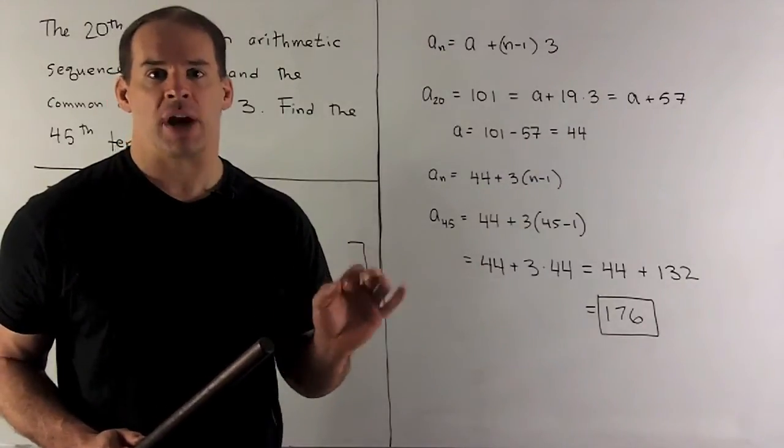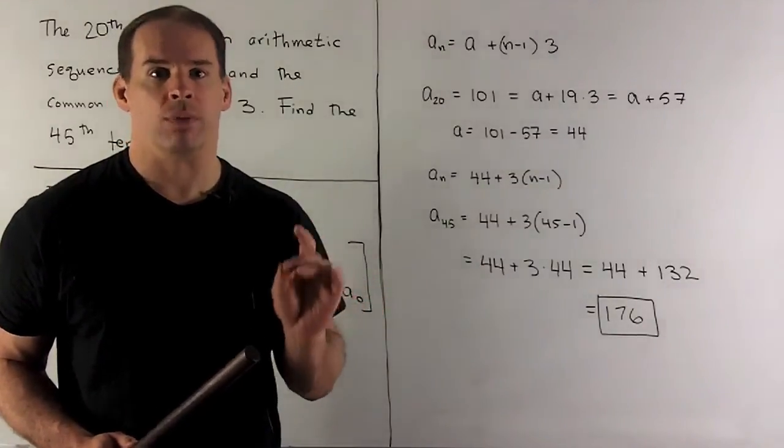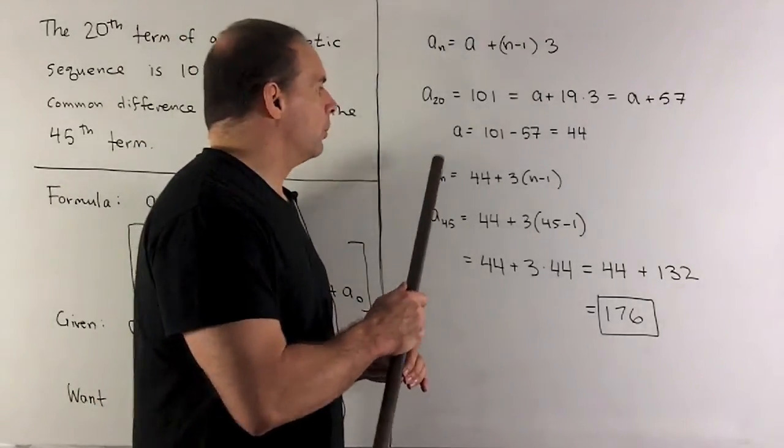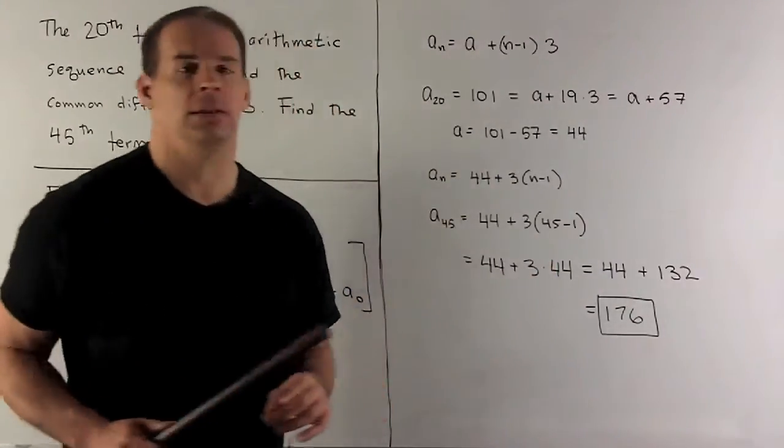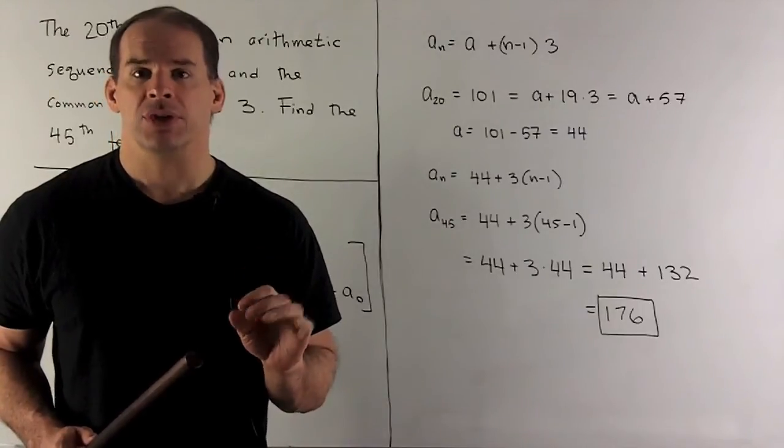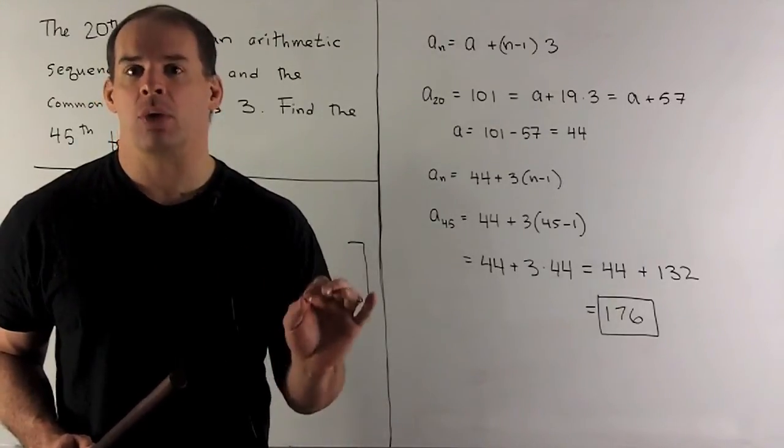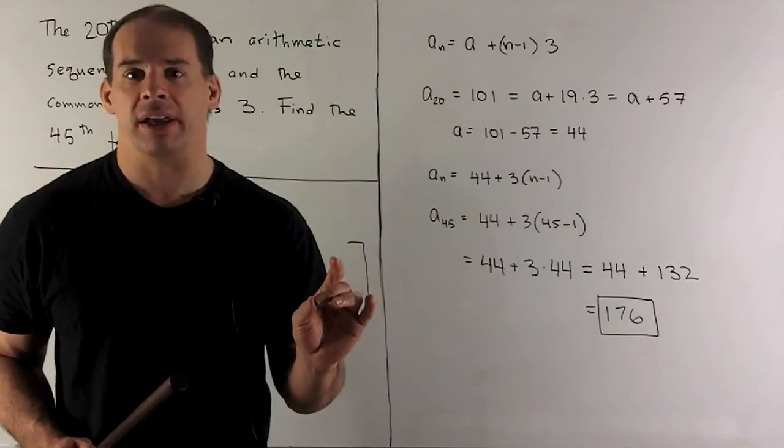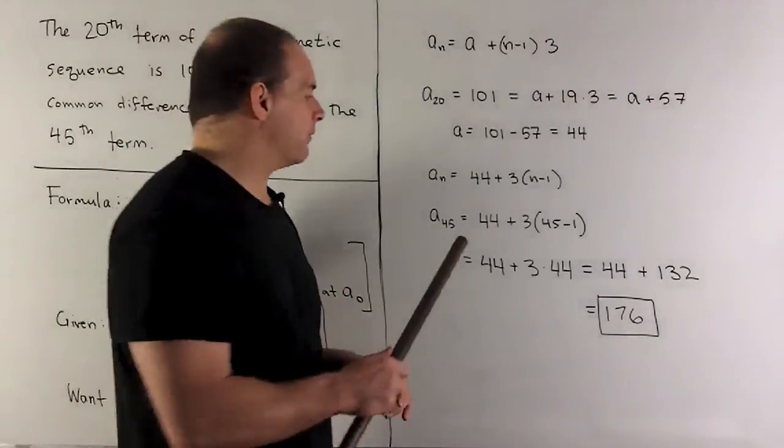I take the 57, subtract it off of 101, we get 44. So a is equal to 44. Now I want a_45, so we now have our general equation, we put 45 in, what comes out? I'll have 44